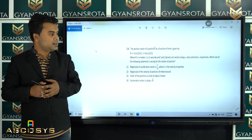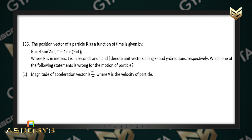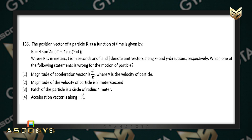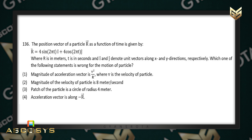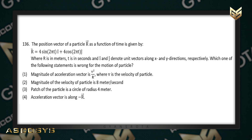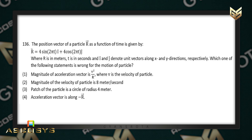The first question says that the position vector of a particle R as a function of time is given by R = 4sin(2πT) î + 4cos(2πT) ĵ, where R is in meters, T is in seconds, and i and j denote unit vectors along the x and y directions respectively. Which one of the following statements is wrong for the motion of the particle?